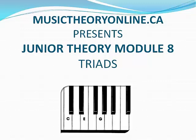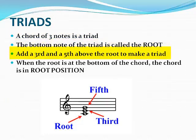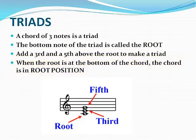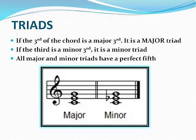Today we're going to be talking about triads. Most of you have already played triads on your instruments. The triad is simply a chord that has three notes. The bottom note of the triad is always the root. You then add a third and a fifth above the root to make the triad. When you have the root at the bottom of the chord, the triad is in root position. Note that the term chord is often used instead of triad, because a chord is any combination of notes and a triad is a type of chord.